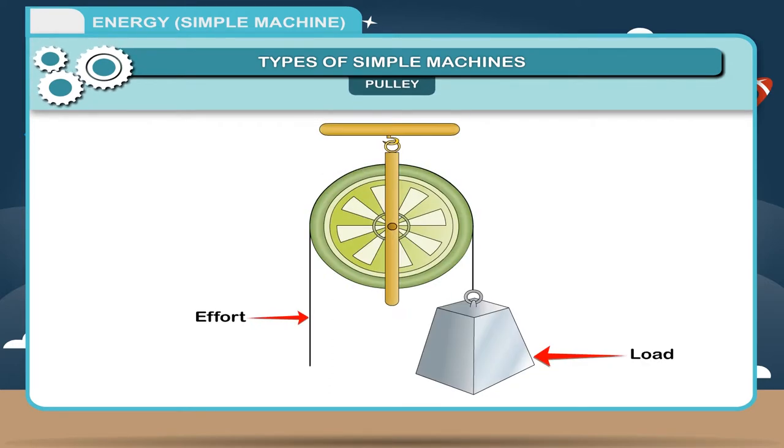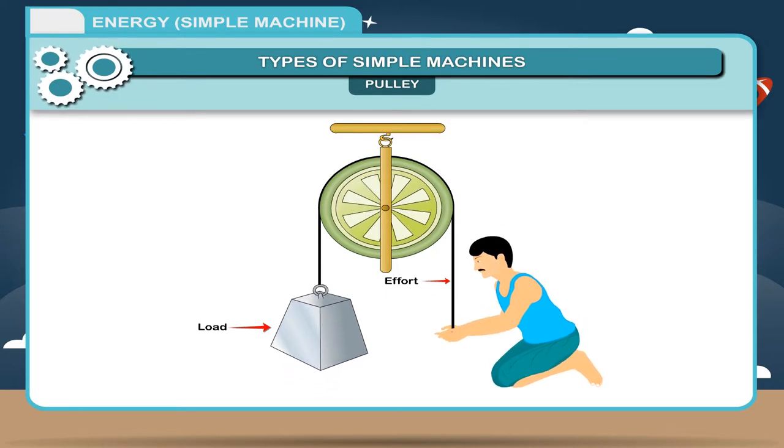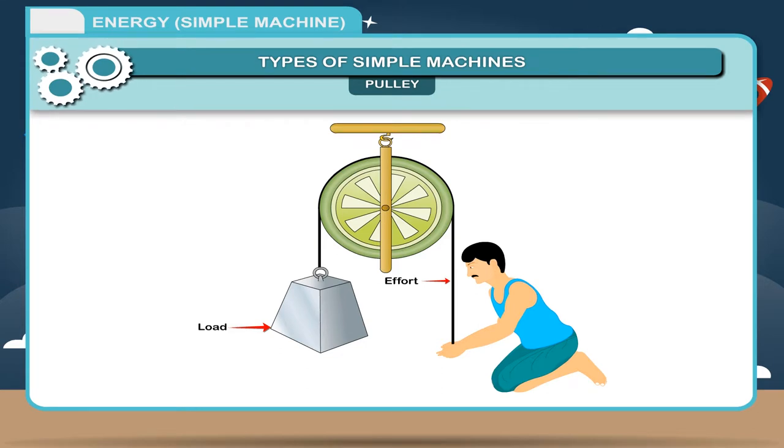A pulley is a simple machine which lifts heavy load with less application of effort. It is a flat circular disc having groove on its edge and capable of rotating around its central axis called axle. A pulley is used to lift heavy objects. The pulley is hooked onto a support at a certain height above the object and a rope is passed over the pulley along the groove. The groove prevents the rope from slipping off the disc. The load is placed over one end of the rope whereas the effort is applied on the other end. A pulley is a wooden or metallic disc with a grooved rim capable of rotating about an axis passing through its center.